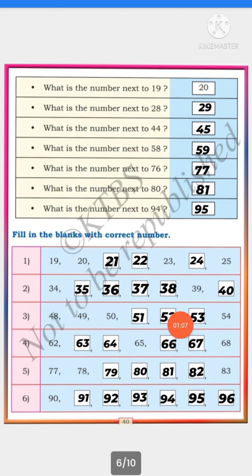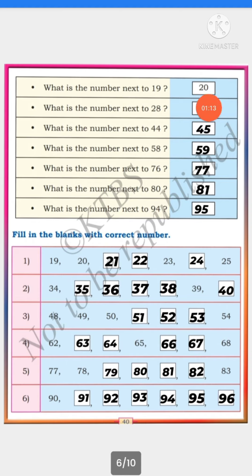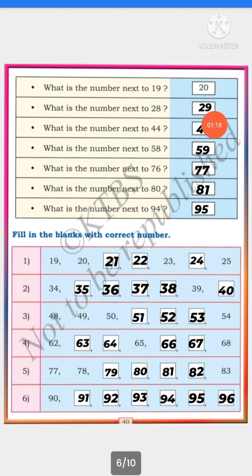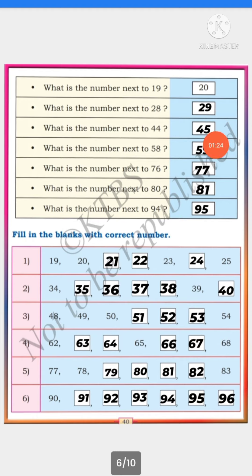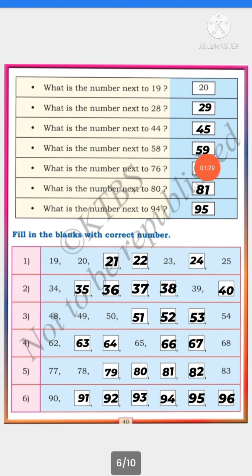See here. What is the number next to 19? After 19? — 20. What is the number next to 28? — 29. What is the number next to 44? — 45. What is the number next to 58? — 59.